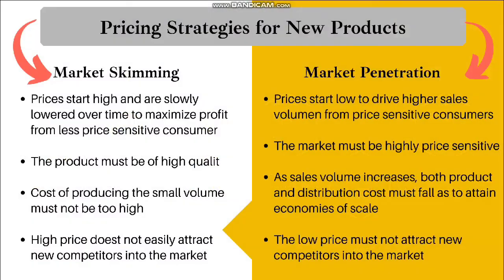There are two types of pricing strategies for new products. The first is market skimming. Market skimming involves prices that start high and are slowly lowered over time to maximize profit from less price-sensitive consumers. The product must be of high quality, and the cost of producing the small volume must not be too high.